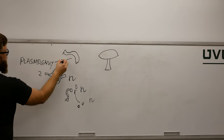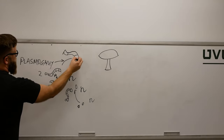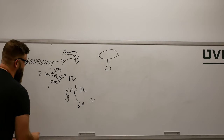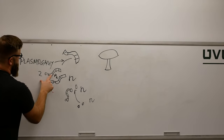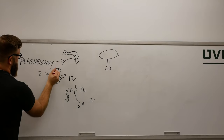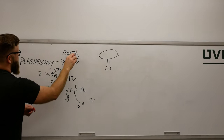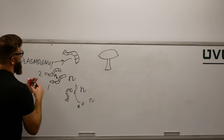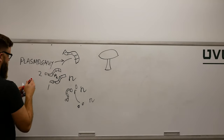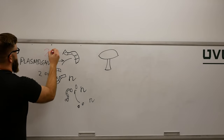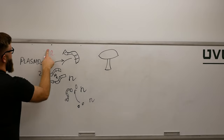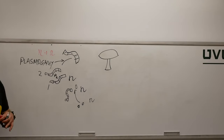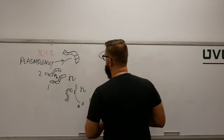Plasmogamy happens here. Instead of a single nucleus, we now have nuclei from both mating types — black and red, black and red — sharing the same cell. But we are n plus n right here, not 2n. We are not 2n until karyogamy happens.